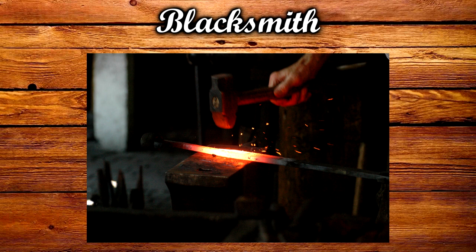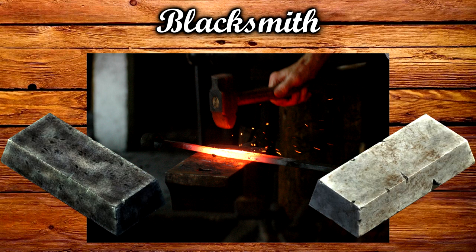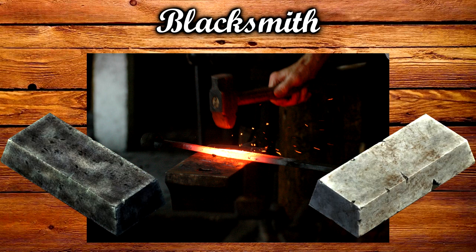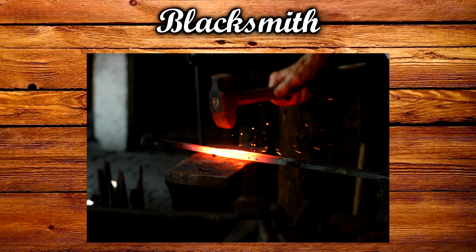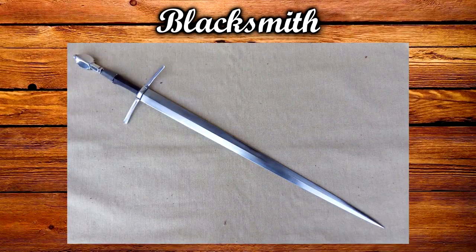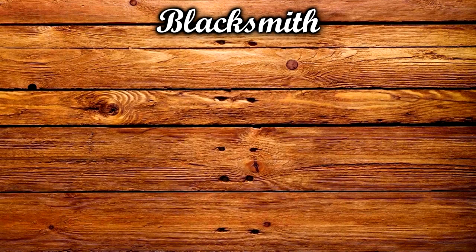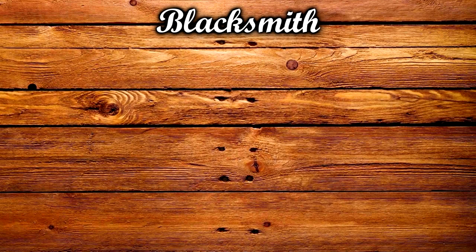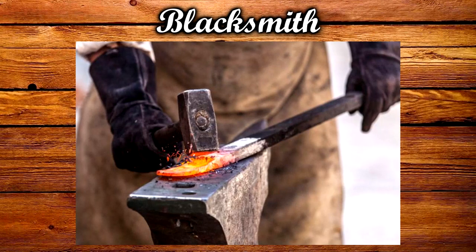That's because blacksmiths work with metals such as iron and steel, which are quite common. Blacksmiths make items from horseshoes to buckles to even weapons and tools. The 'black' in blacksmith's name is because iron was formerly sometimes called black metal — this could refer to the black fire scale which forms a layer on the surface of iron items when they're heated in a forge.